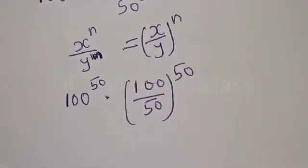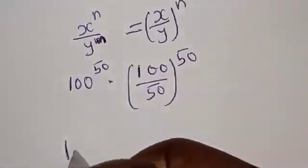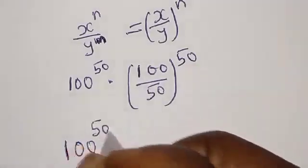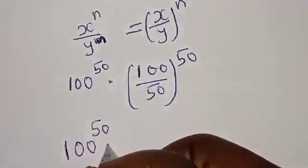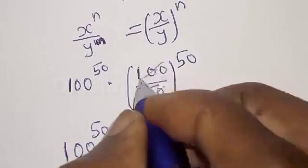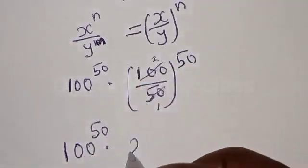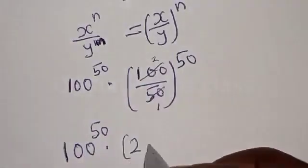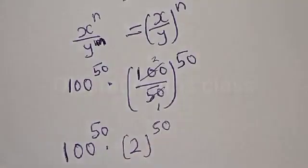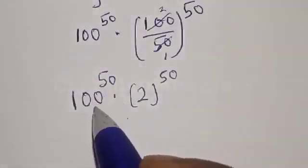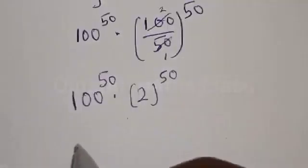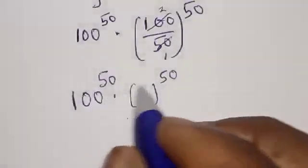Now we have 100 raised to power 50 multiplied by — here 100/50, that is 2 — raised to power 50. In this case we have different bases but the same exponent, that is the same power.